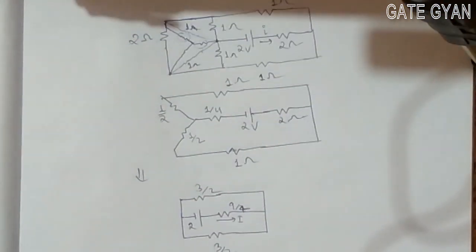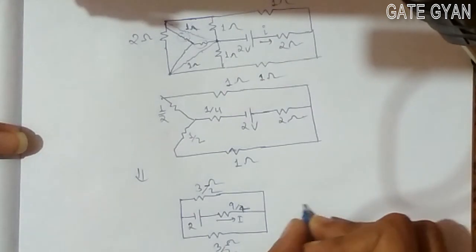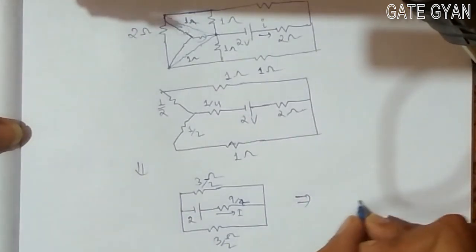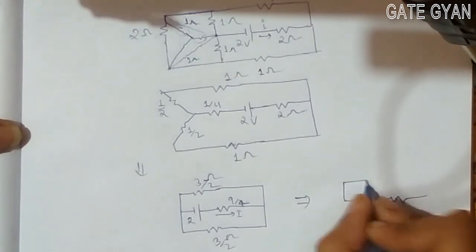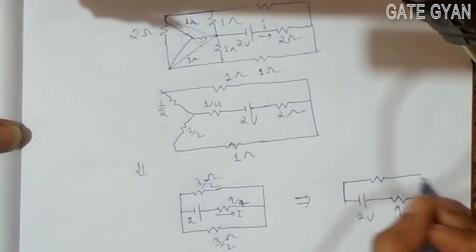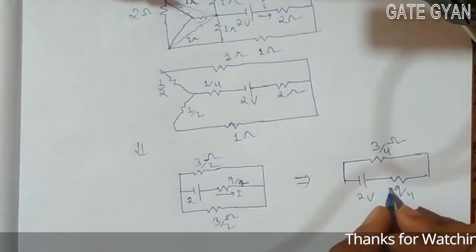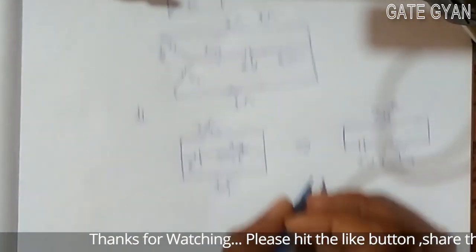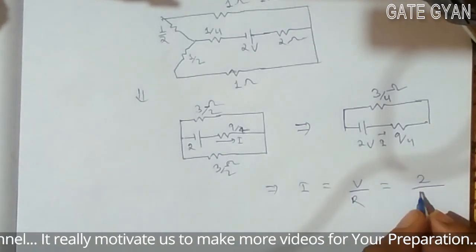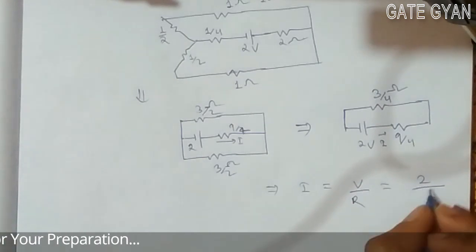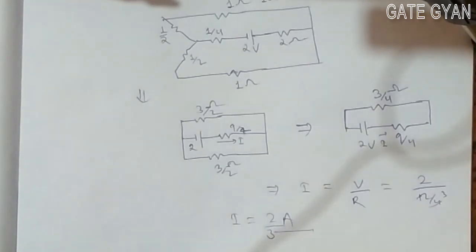So my circuit is going to look like this: 3/2 ohm, 3/2 ohm. These 3/2 and 3/2 in parallel become 3/4. Now it will become: this 2 volt, this is 9/4, and 3/2 parallel 3/2 will become 3/4. So now I have to find current I. My current I will be V divided by R, so it will become 2 divided by (3/4 plus 9/4), which is 12/4 = 3. So my current will be 2/3 ampere. This is my answer.